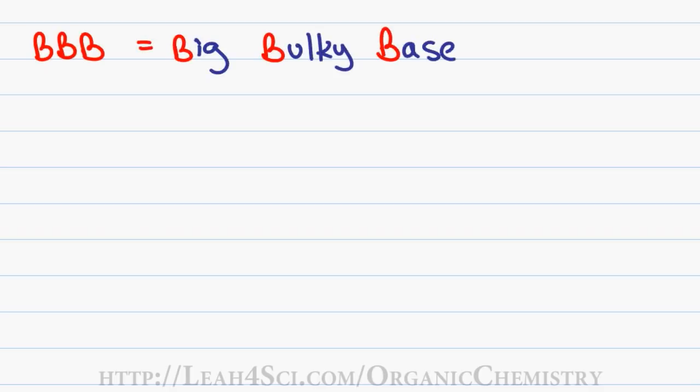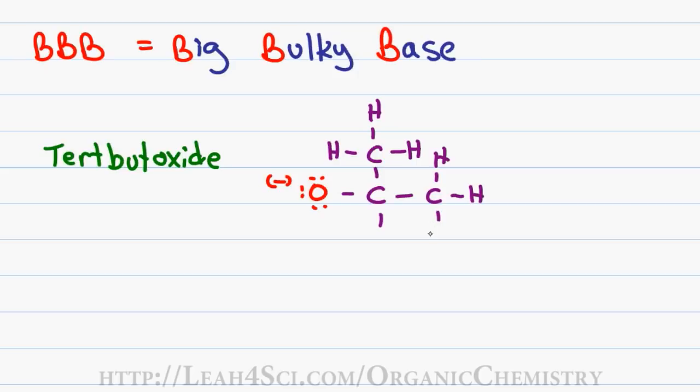The most common example that you're going to see is tert-butyl oxide or tert-butoxide. This molecule has an O- making it very strong and very reactive. The O- is bound to a carbon which is bound to three other carbons making the entire molecule very bulky. In chemical terms, this is referred to as steric hindrance which tells you that the molecule gets in its own way.